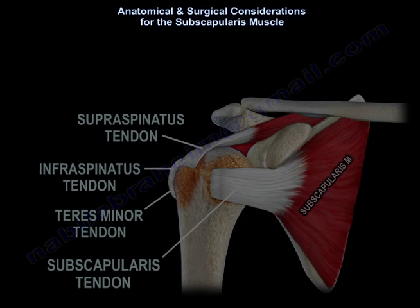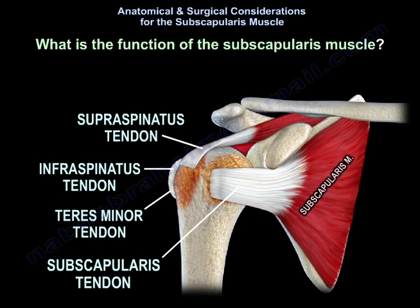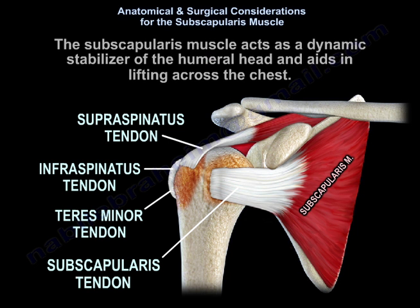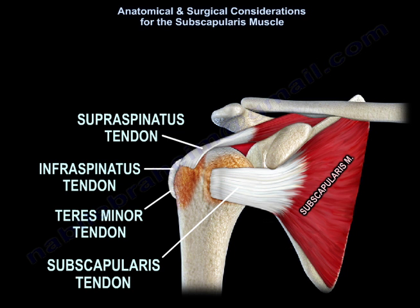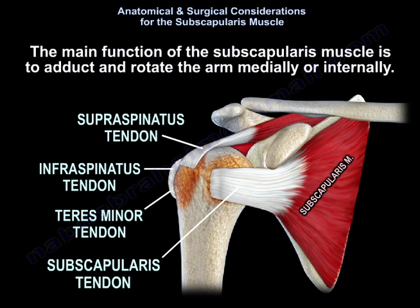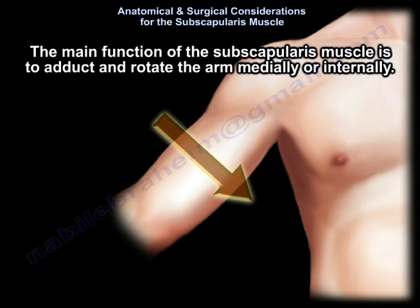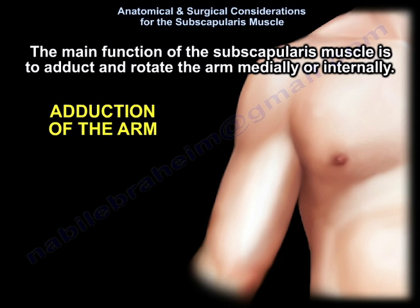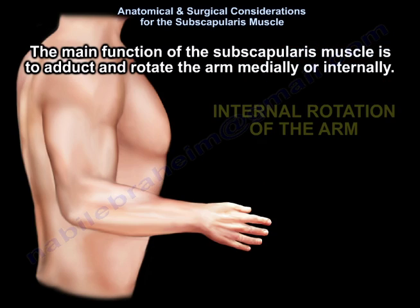The function of the subscapularis: The subscapularis muscle acts as a dynamic stabilizer of the humeral head and aids in lifting across the chest. Its main function is to adduct and rotate the arm medially or internally.